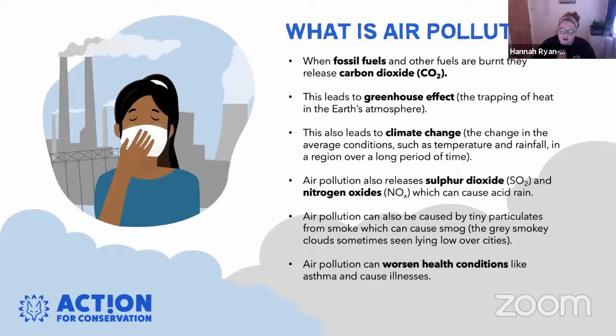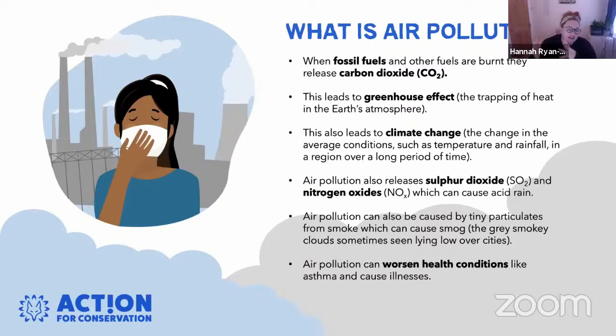Air pollution is when fossil fuels and carbon dioxide are burned and released into the atmosphere, leading to the greenhouse effect and climate change. It also includes sulfur dioxide and nitrogen oxides being released, which can cause phenomena like acid rain, as well as smog in our cities. Air pollution impacts our health too — it can worsen conditions like asthma and create illnesses.